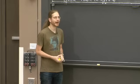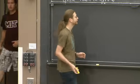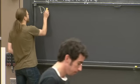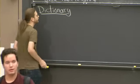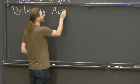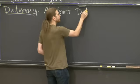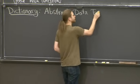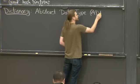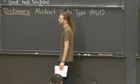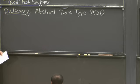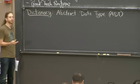So today is about how to make it actually happen. What is it? It is usually called a dictionary. So this is an abstract data type. A dictionary is a data structure that can store items — it can insert items, delete items, and search for items.